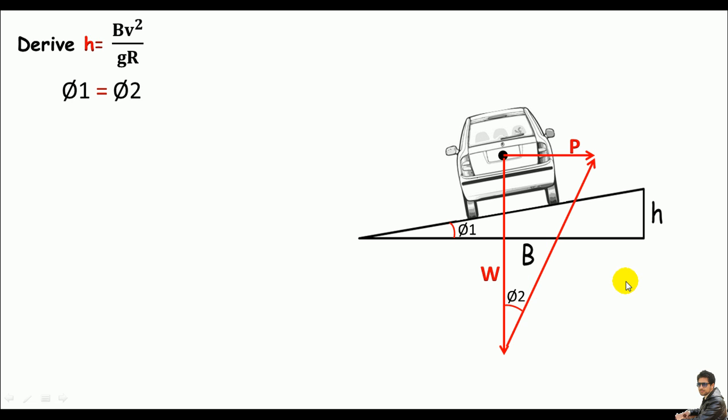equal to perpendicular over base, or rise over run - this is a ratio. For tan θ₁, I have the perpendicular as the super elevation which is h, and the base is the road